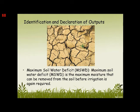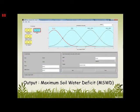Identification and declaration of output: the output of this project is Maximum Soil Water Deficit (MSWD). Maximum soil water deficit is the maximum moisture that can be removed from the soil before irrigation is again required. This is the output as defined in MATLAB — it has abnormal deficit, medium deficit, and highly deficit.